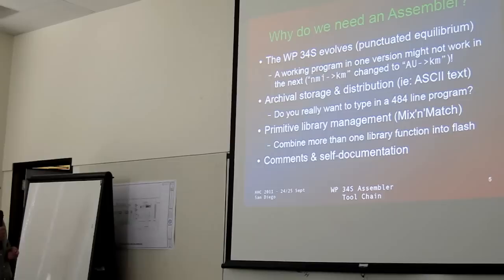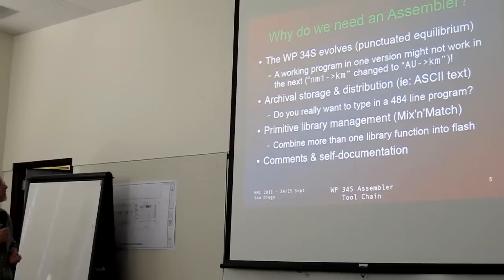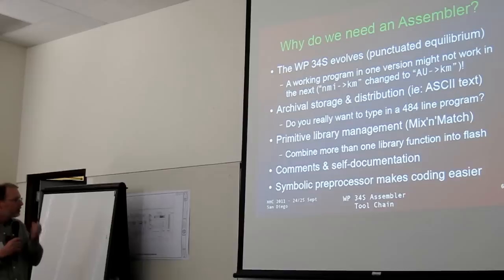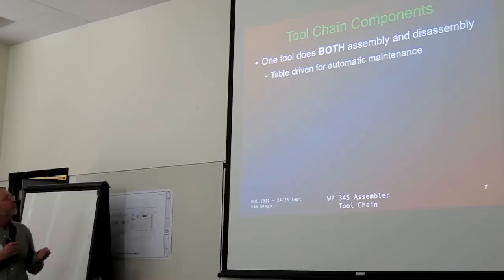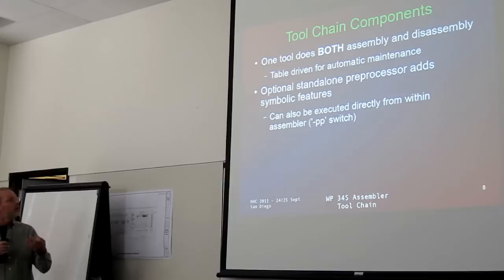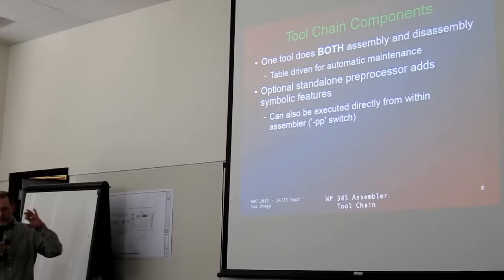Obviously we want some documentation and comments. Late in the process, Paulie decided he wanted some symbolic preprocessing capability. It's one Perl script that does both: you can assemble ASCII code into the binary image that you blow into the calculator, and you can also recover your image from the calculator and disassemble it back into source.